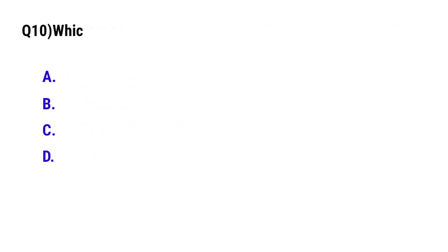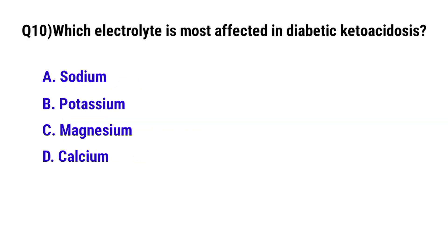Question number 10: Which electrolyte is most affected in diabetic ketoacidosis? The correct option is B: Potassium.